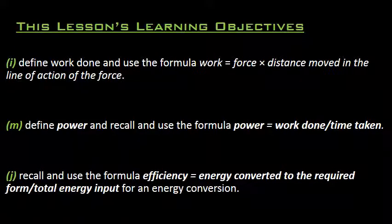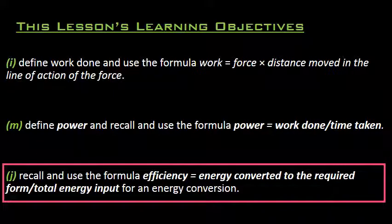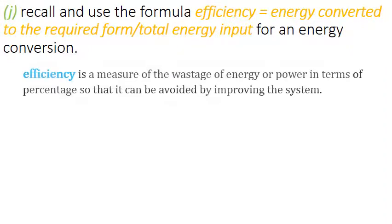Now we are going to understand the last learning objective of this lesson: efficiency. Efficiency is a measure of wastage of energy or power in terms of percentage so that it can be avoided by improving the system. Efficiency tells how much input power is getting converted into useful power, and the remaining percentage tells us how much energy is being wasted.